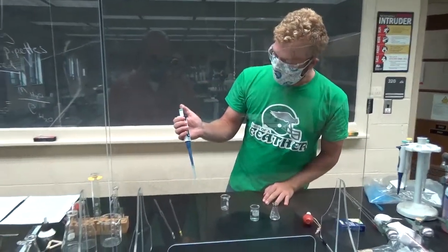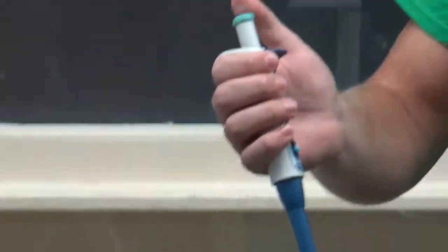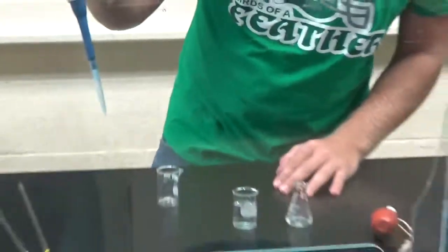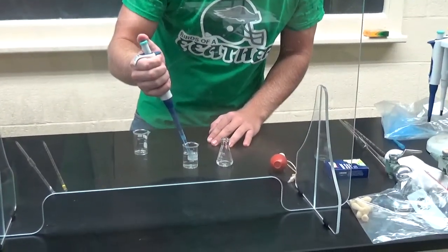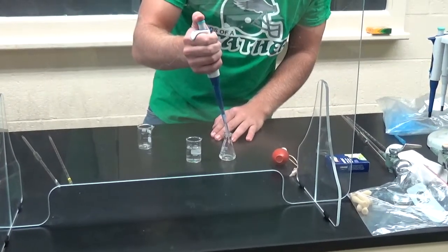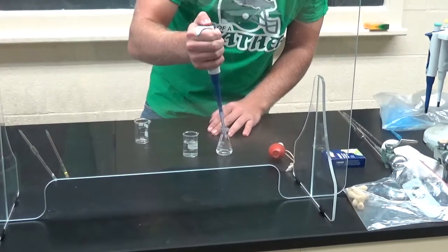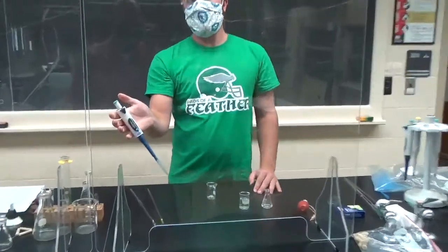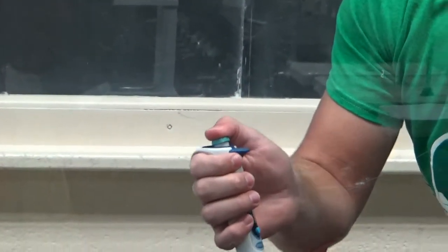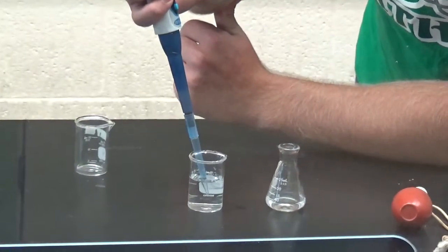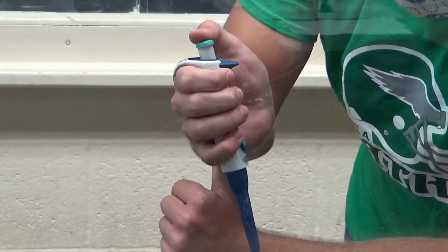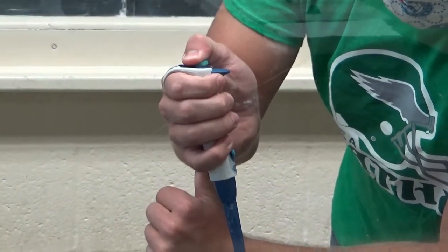When you want to draw something up, there's like two stopping points on an automatic pipette. When you want to draw something up, you only go to the first stopping point. You go down, you press down to the first stopping point, you draw up the amount of the solution or water that you would like, and then you pull out. Then you go down to the second stopping point past the first one. Let me zoom in on pressing down completely. You go down to the first stopping point, draw up the amount of solution, and then you go all the way down to the second stopping point. That pushes all the liquid out.